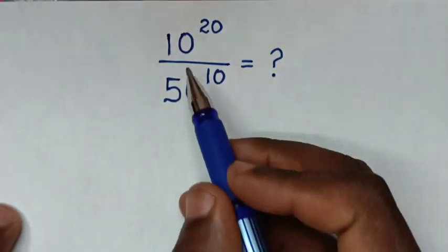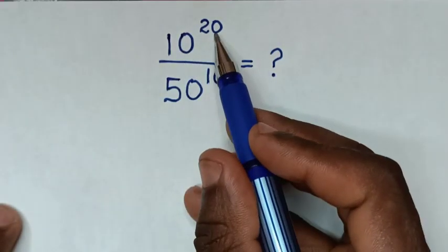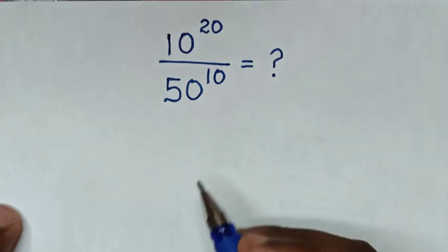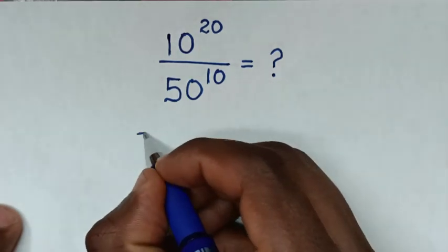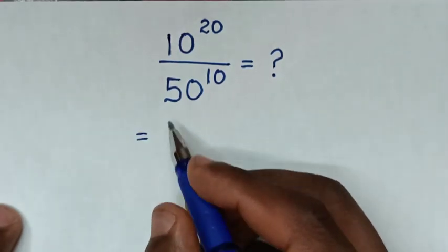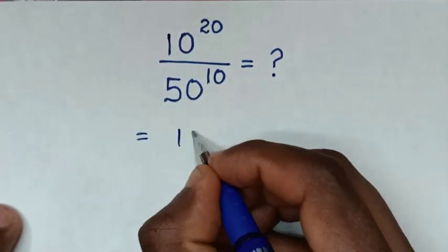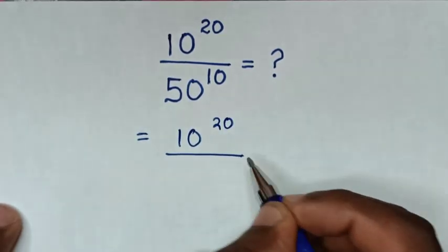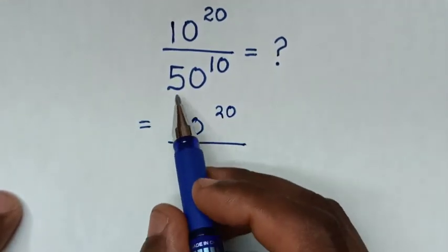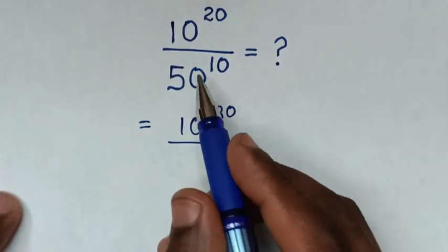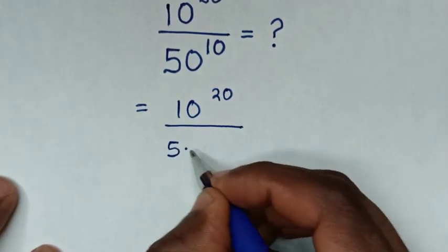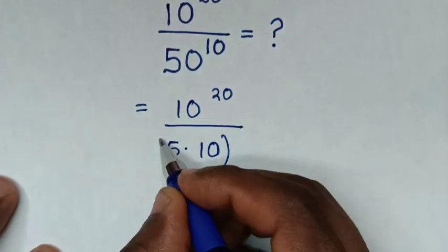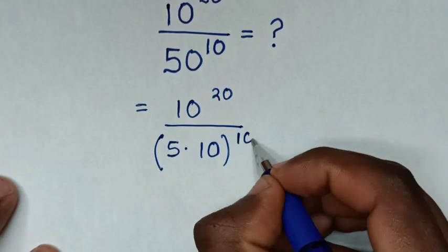Hello, how to solve 10 power of 20 over 50 power of 10. In the numerator it is 10 power of 20, and in the denominator 50 is the same as 5 times 10, bracket power of 10.